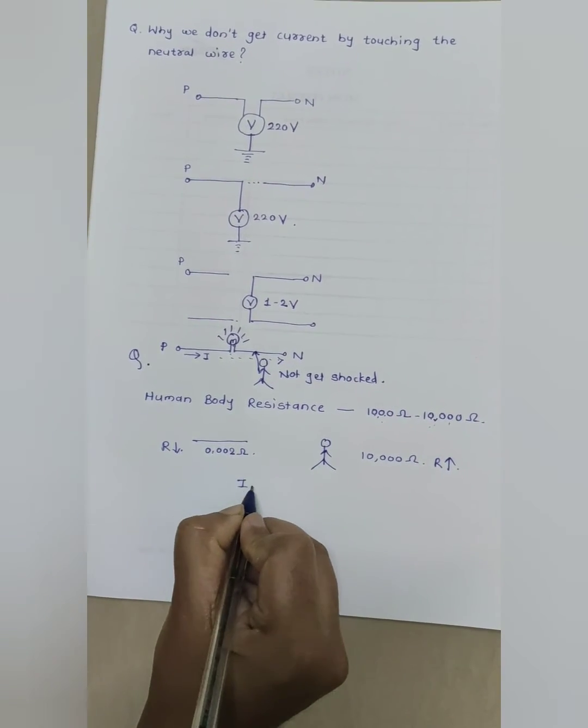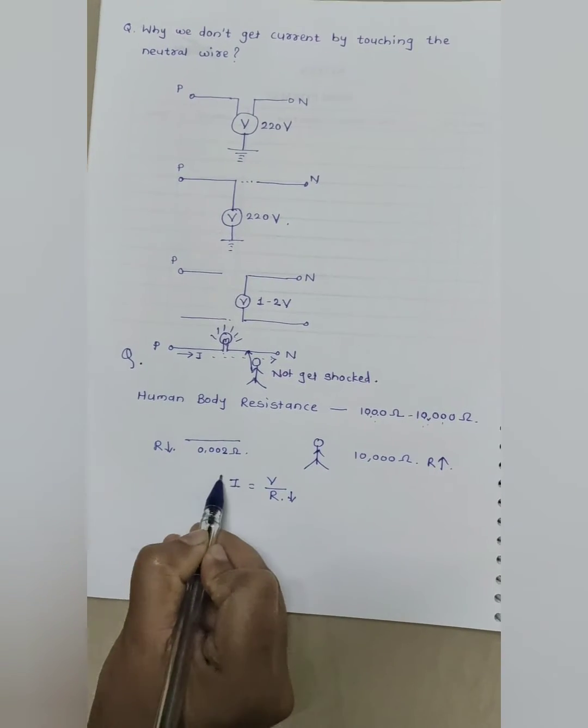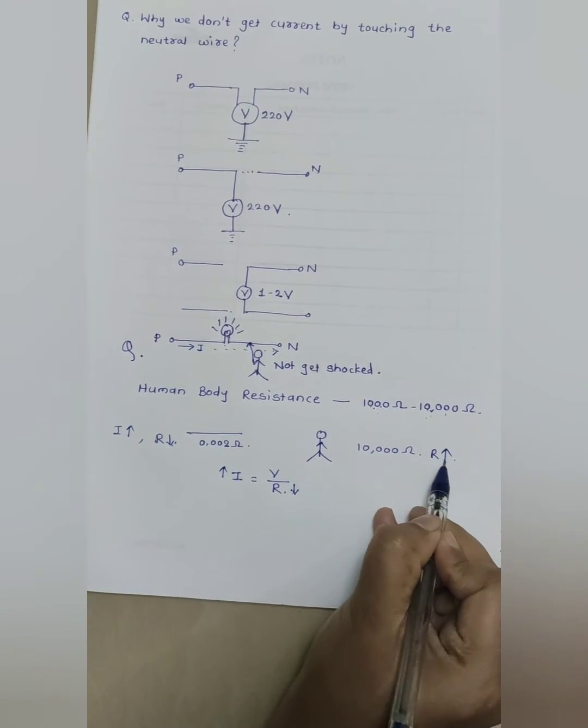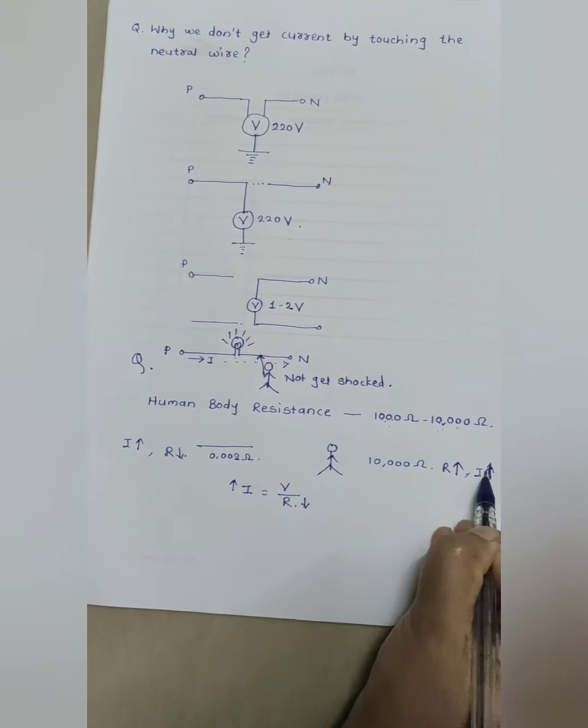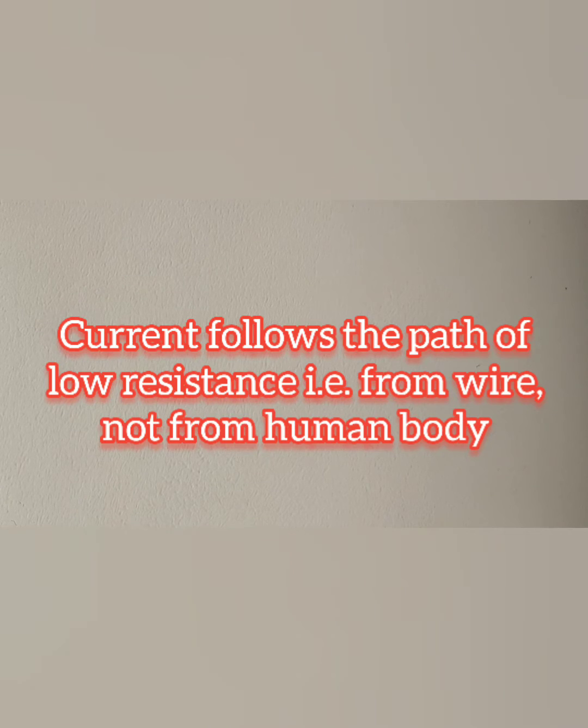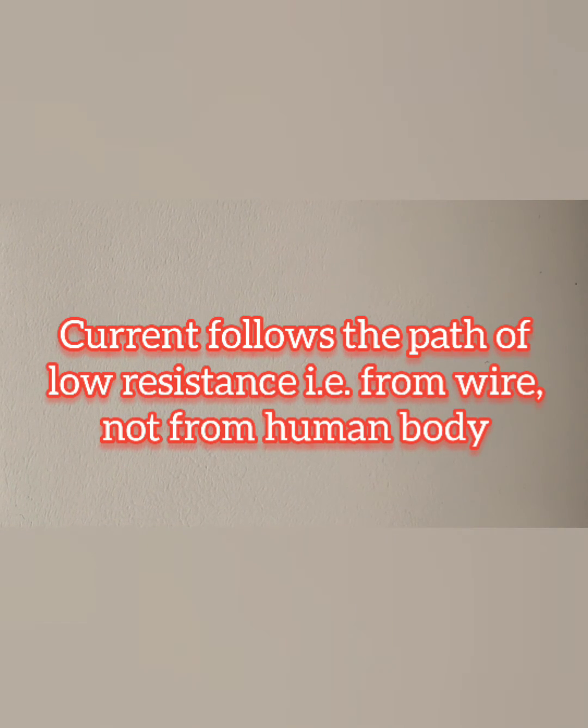We know Ohm's law: I is equal to V upon R. That is, current is equal to voltage divided by resistance. If current is high, resistance is low and vice versa. That means current flows through the path where resistance is very low.